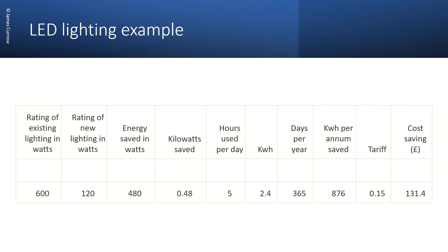So assuming that the lighting is going to be used for 5 hours per day, 365 days per year, we can calculate a saving in kilowatt hours of 876. So if we assume an energy tariff of 15 pence per kilowatt hour, this would give us a saving of £131.40 per annum.